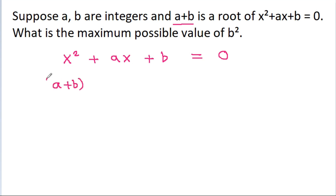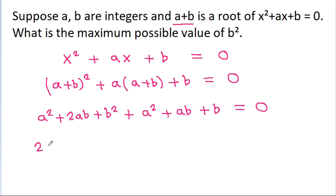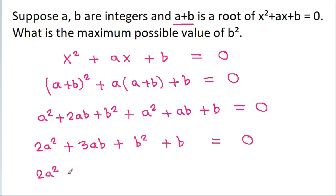So we get (a+b) squared plus a times (a+b) plus b equals 0. Expanding: a squared plus 2ab plus b squared plus a squared plus ab plus b equals 0. Combining like terms: 2a squared plus 3ab plus b squared plus b equals 0.